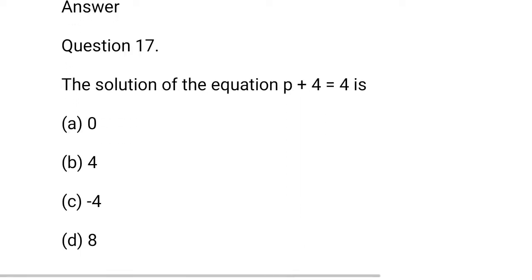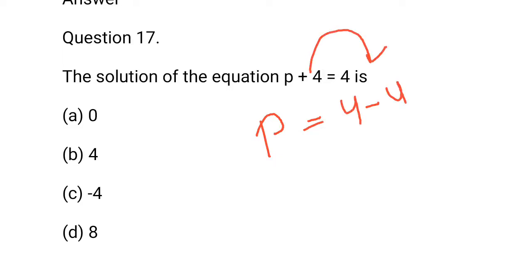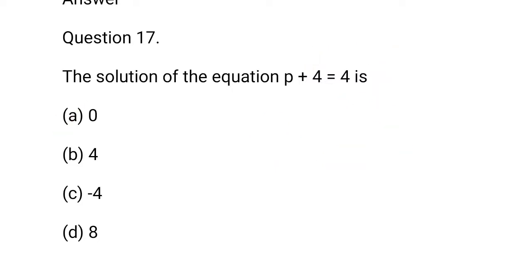Question 17: The solution of the equation p plus 4 is equal to 4. So, p will be equal to 4 minus 4. 4 goes to right hand side and becomes minus. 4 minus 4 is 0. So, a option is correct.